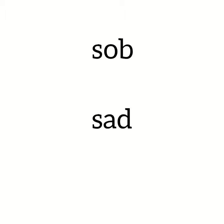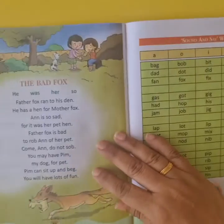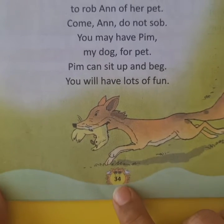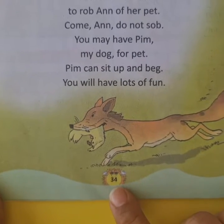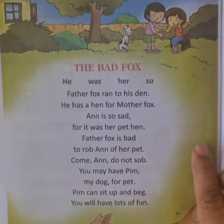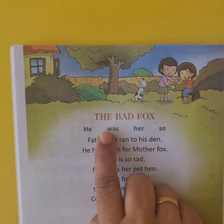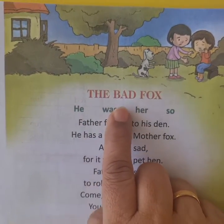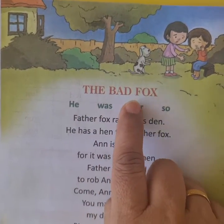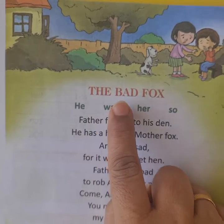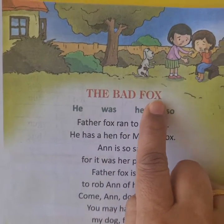Now let us read the lesson. Please go to page number 34 of your Radiant Wave book. Let us start. The title is 'The Bad Fox'.